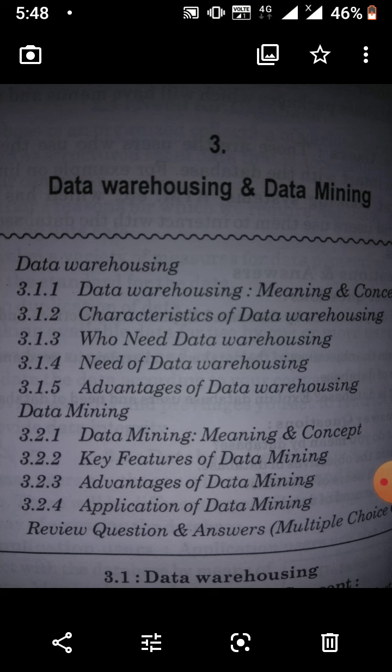Some definitions of data warehousing: Data warehousing is a technique for collecting and managing data from varied sources to provide meaningful business insight. It is a blend of technologies and components which allows the strategic use of data. It is an electronic storage of a large amount of information by a business, designed for query and analysis instead of transaction processing. It is a process of transforming data into information and making it available to the user.